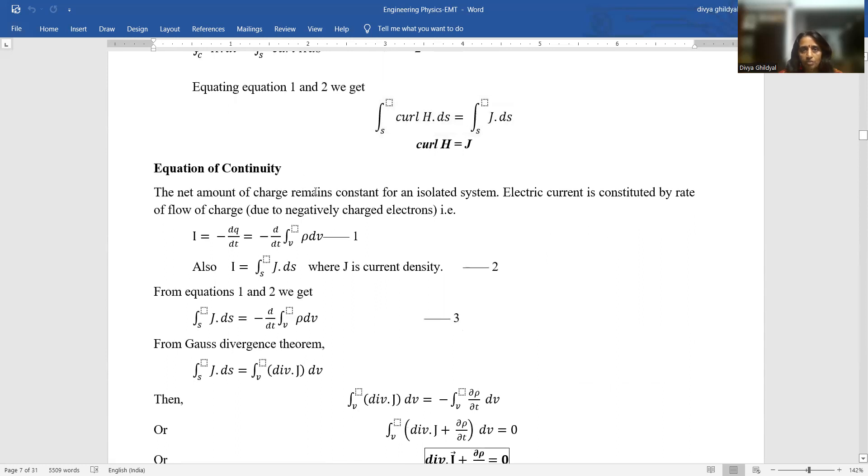So the net amount of charge remains constant for an isolated system. Electric current is constituted by rate of flow of charge due to negatively charged electrons. That means you have heard of the formula Q equal to IT - charge is equal to current into time. That very same expression I have written it in a differential form here. These notes you will get the link below this video lecture. I equal to minus dQ by dT. Charge Q can also be written as rho dV and I have integrated it. J current density is equal to I upon A. So in integral form I have written it as I is equal to integral S J dot dS, where J is current density.